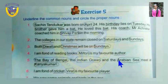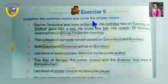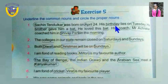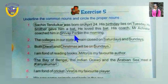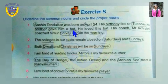Exercise five: underline the common nouns and circle the proper nouns. Do it carefully — underline common nouns and circle proper nouns. First sentence: Sachin Tendulkar was born on April 24 and his birthday falls on Tuesday. His brother gave him a bat, and he loved his bat. His coach Mr. Achrekar coached him in Shivaji Park in the morning. Sachin Tendulkar, April, Tuesday, Shivaji Park, and Mr. Achrekar are proper nouns — circle them.